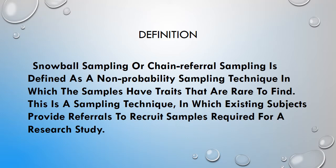For example, a researcher wants to conduct a study on the prevalence of HIV among commercial sex workers. In this situation, snowball sampling is the best choice to select a sample. It is also called chain referral sampling and is defined as a non-probability sampling technique where the samples have traits that are hard to find. Here, existing subjects provide referrals to recruit the sample required for a research study.